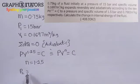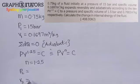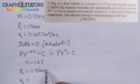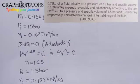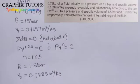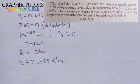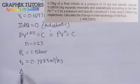The final state gives us P2 and v2. P2 is 1.5 bar and the specific volume v2 is 0.7883 meter cube per kilogram. We are asked to calculate the change in internal energy, delta U.